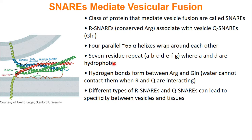These SNAREs are seven-residue repeats: A, B, C, D, E, F, G. A and D are hydrophobic, which helps with the contact between the SNAREs. You'll also get hydrogen bonds between the R and glutamine from these SNAREs, so R and Q are interacting and water can't be between them. These hydrogen bonds and hydrophobic interactions make the SNARE complexes a really strong interaction.